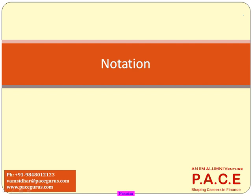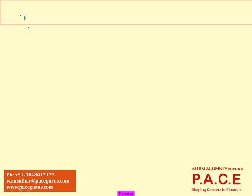Let's get started topic by topic under this chapter. The first thing we need to be comfortable with is understanding the different types of numbers — whenever we see any kind of number, what category it falls into. So what are the various types of numbers available? Let's start with the whole gamut of numbers.